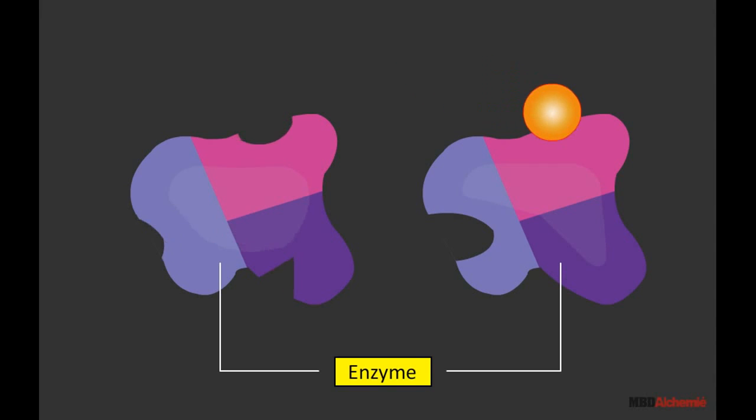Otherwise, the conversion does not take place. An activator can change the inactive enzyme to active and then the enzymatic action for the conversion of substrate to product molecules can take place.